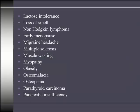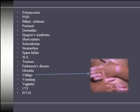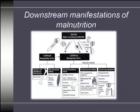Migraine headaches, multiple sclerosis, muscle wasting, and bone loss also appear on the list. There is also vitiligo — an autoimmune disease of the skin where the skin starts to lose its pigment — among many other conditions.